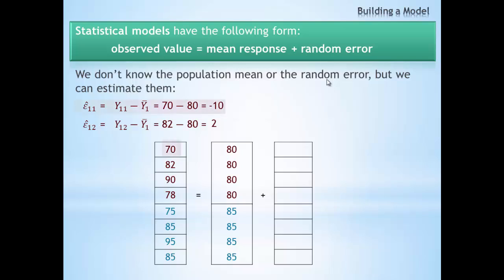Residuals are simply the observed values minus the expected mean values. Using the same subscript notation, the first residual from the first group is simply y_11 minus the mean of the first group. The residual from the second group is simply y_12, or 82 in this case, minus the mean of the first group, giving us a value of 2.